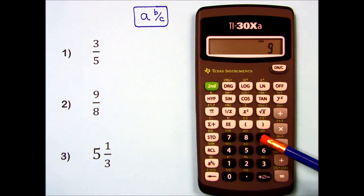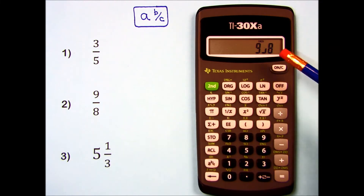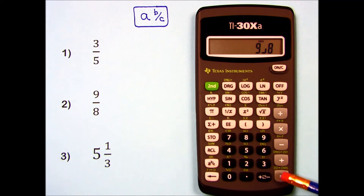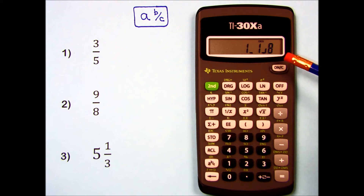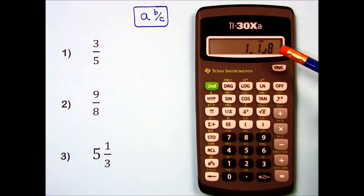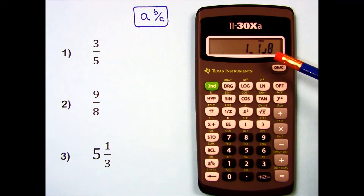Let's try number 2: 9, fraction key, 8. When I press equals, something special happens — the calculator changes it into a mixed number format. We're going to talk more about going between proper, improper, and mixed number formats in practice sets 5 and 6.